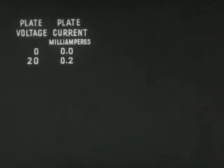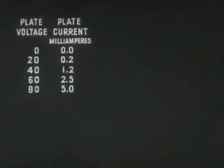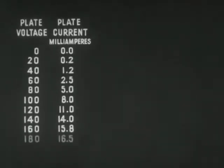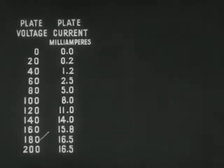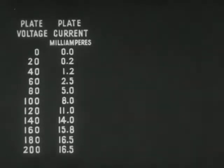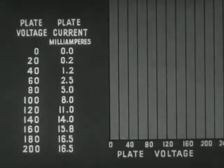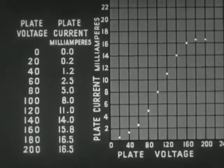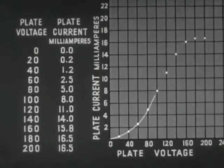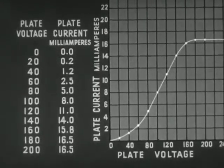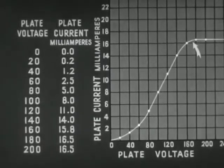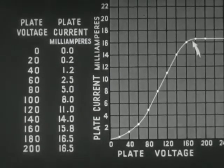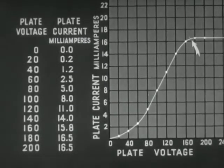If the voltage on the plate is increased, the plate current will increase since more electrons will be attracted because of the higher positive charge. With ordinates representing voltage and current, we can trace a curve to show this relationship. Note the saturation point beyond which there is no increase in the plate current even when the voltage is increased.